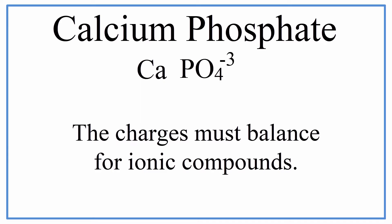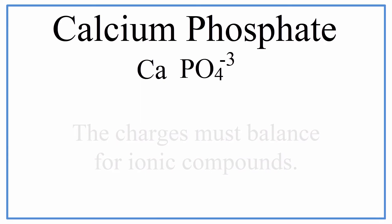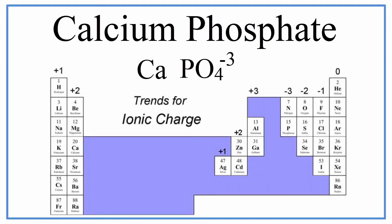So the PO4 is minus three. And we can look up the charge on a calcium ion on the periodic table. We can see that on the periodic table here, calcium in group two has a plus two charge. In fact, all the elements in group two there have a plus two charge.